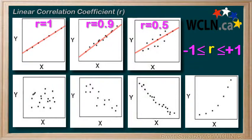In the fourth graph, R equals 0. Now, in this case, we'd say there's no correlation.